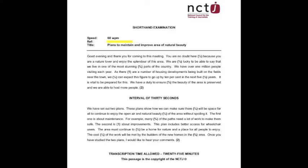This is an NCTJ shorthand exam to be dictated at 60 words per minute. The title of this exam is Plans to Maintain and Improve Area of Natural Beauty. When I next speak, it will be the start of the shorthand exam.